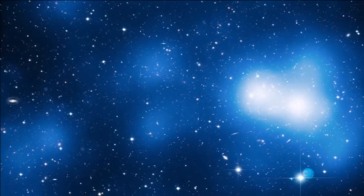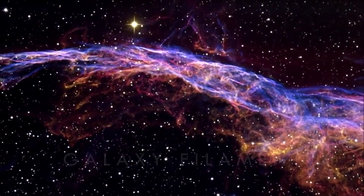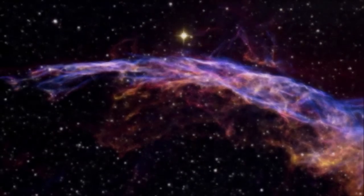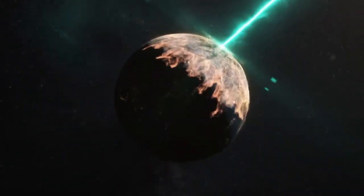The Hercules-Corona Borealis Great Wall is a supercluster that's so big and different that it doesn't fit the pattern of inflation. The supercluster is so big that it's bigger than the universe's largest structure, according to the inflationary model. In 2013, a group of astronomers looking for gamma ray bursts, or GRBs, found the Corona Borealis Great Wall.